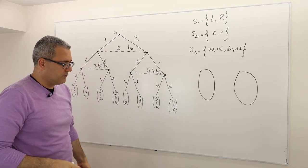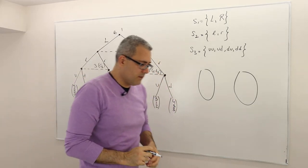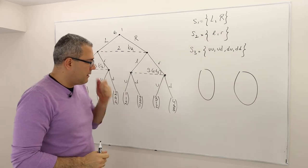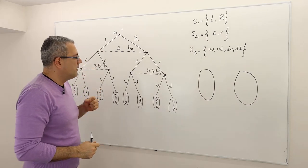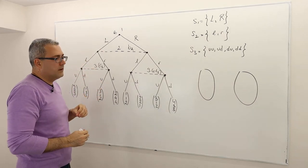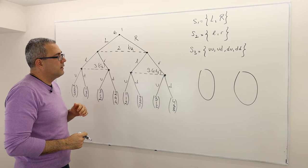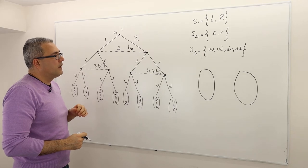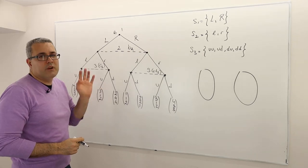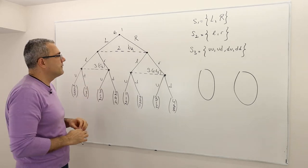Student question: if you remove one info set — if she had only one info set — that would be just two strategies, U and D? Exactly. She would have only two strategies: U and D.